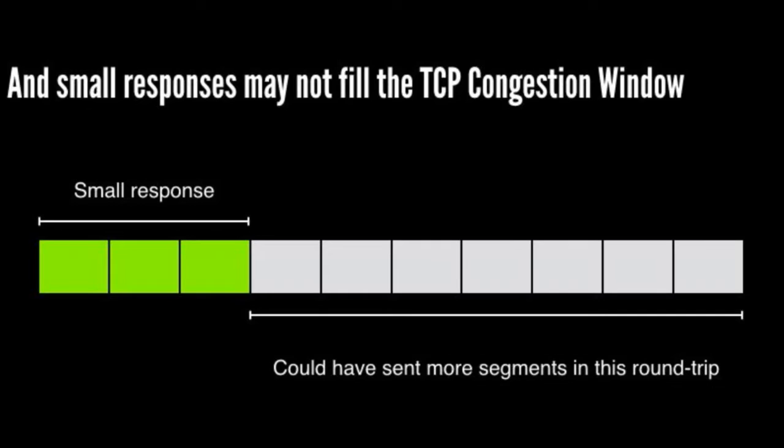TCP, as part of its congestion control mechanism, has something called the congestion window — how many packets a server can send to the client without waiting for a response. Typically a server starts with an initial congestion window of 10, meaning it can send 10 segments per request. If acknowledged, the window grows; if there's packet loss, it decreases. If we have small files that don't fill the congestion window, we're wasting the bandwidth — we could have sent 14.5K but only sent 4.5K.